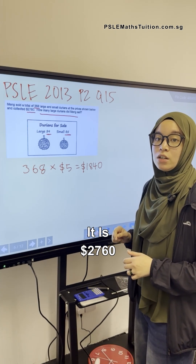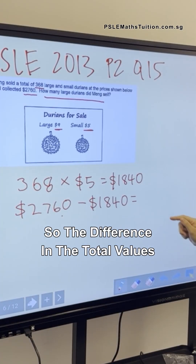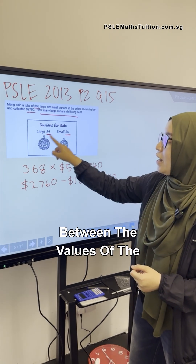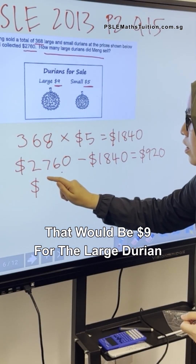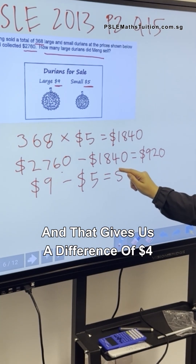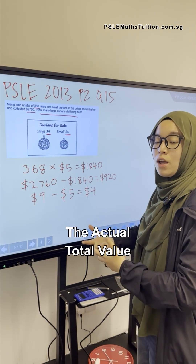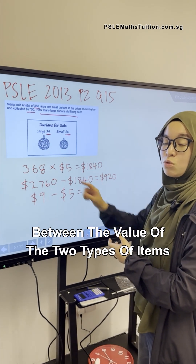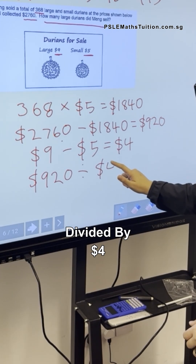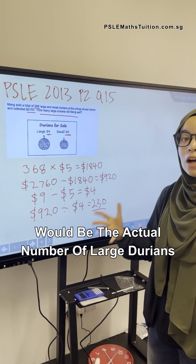The actual total value is $2,760. The second step is to find the difference between the actual total value and the assumed total value, which is $920. Next, we find the difference between the values of the two types of items: $9 minus $5 equals $4. The last step is to divide that difference: $920 divided by $4 equals 230. So 230 is the actual number of large durians that Meng sold.